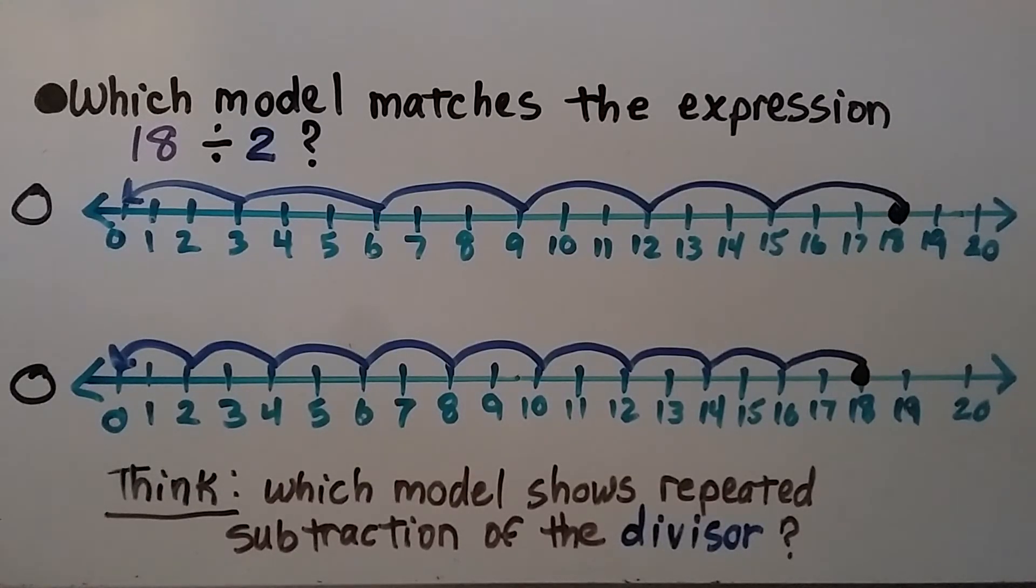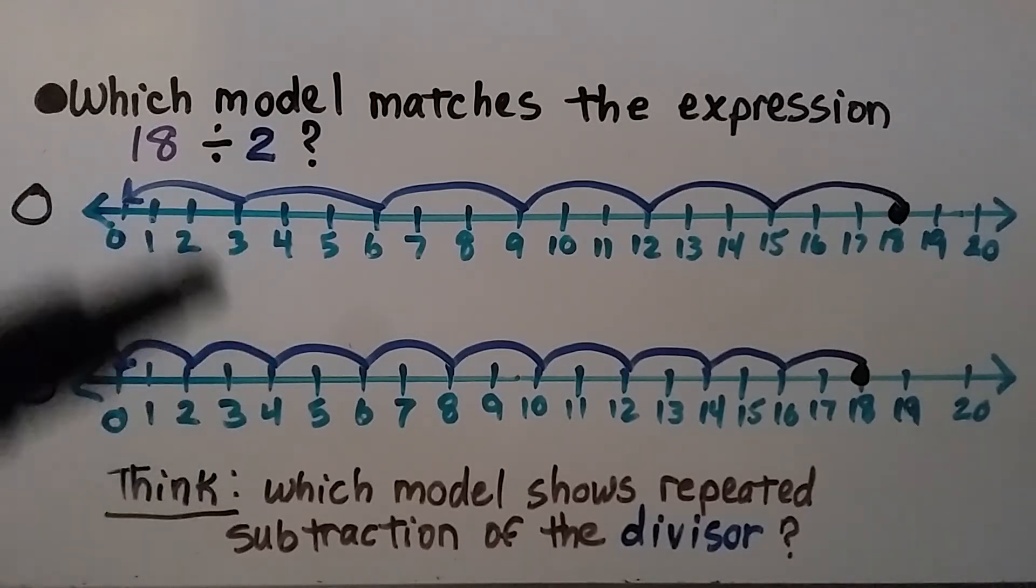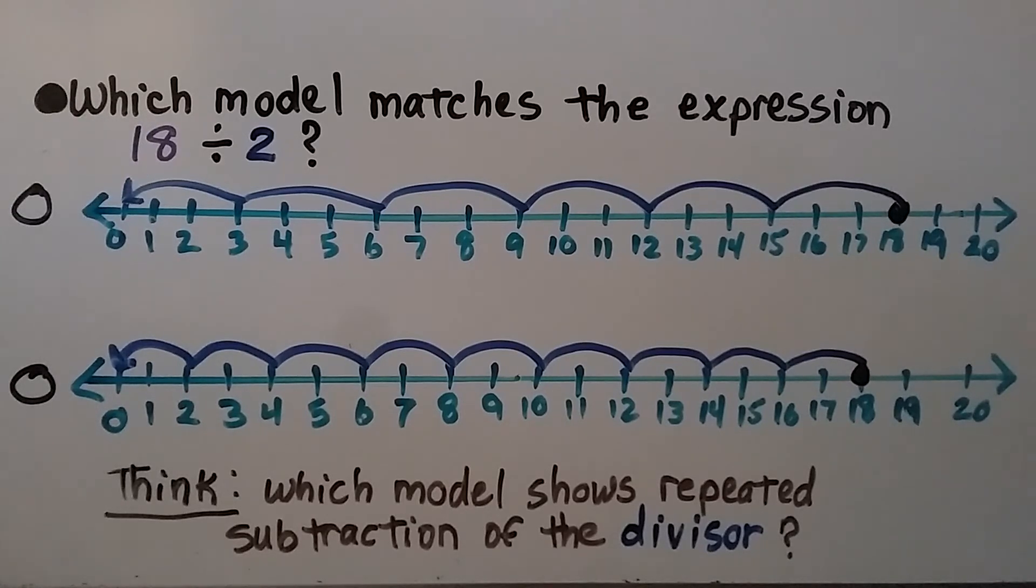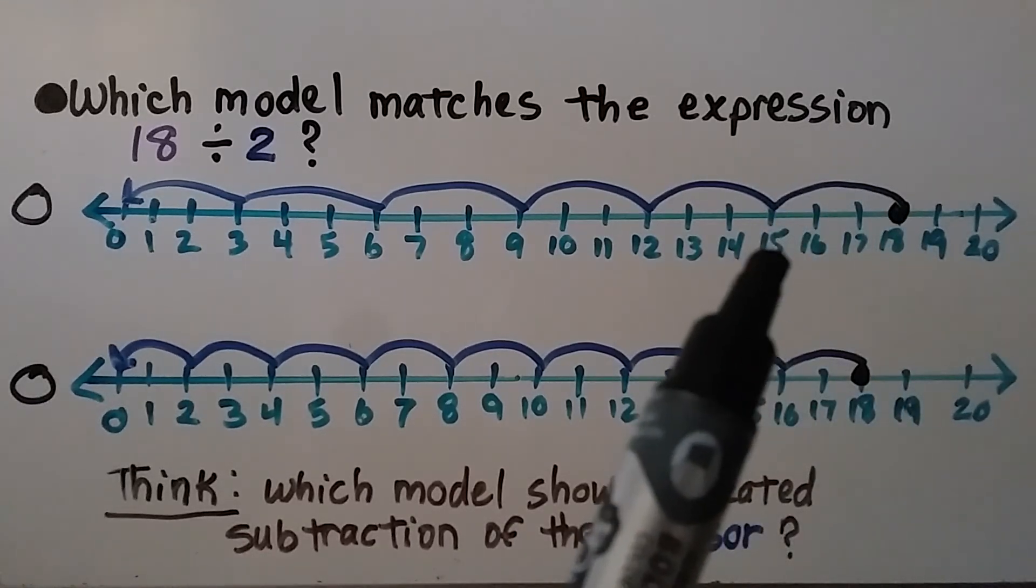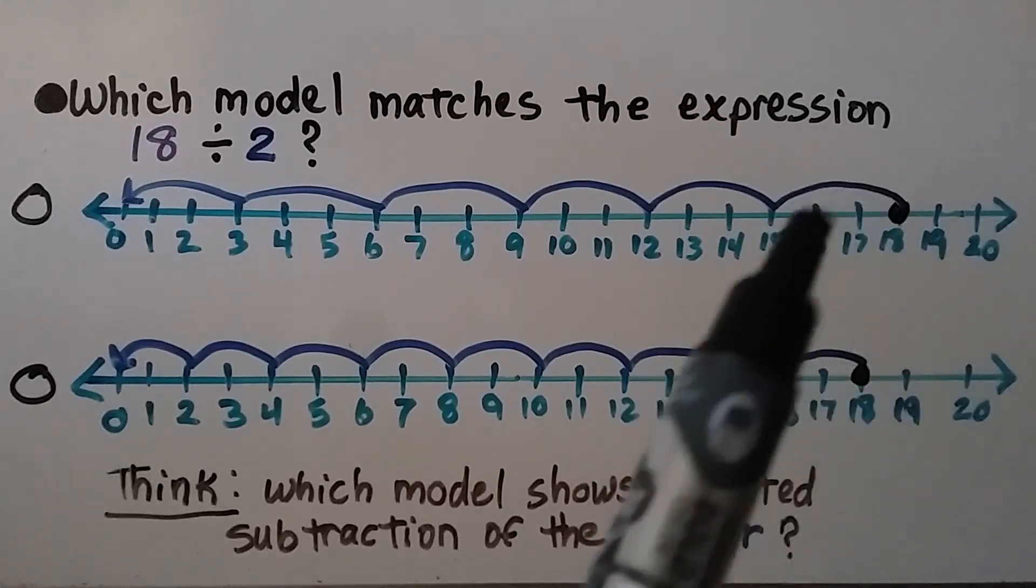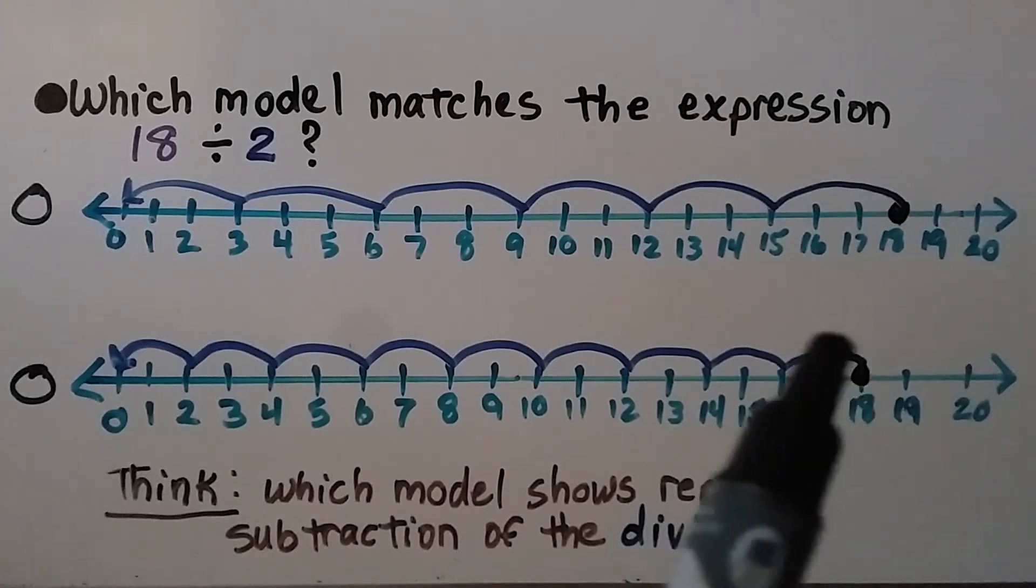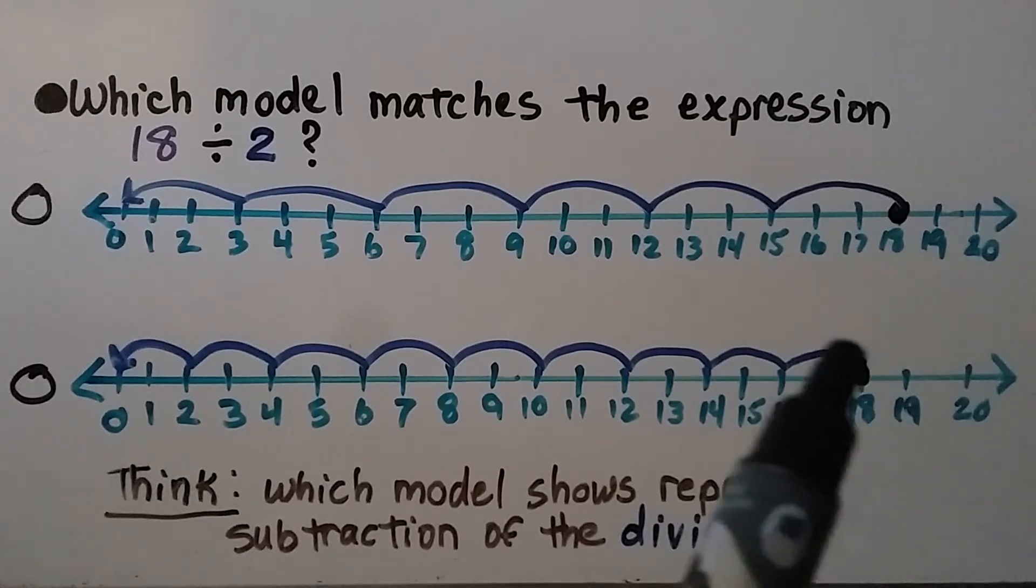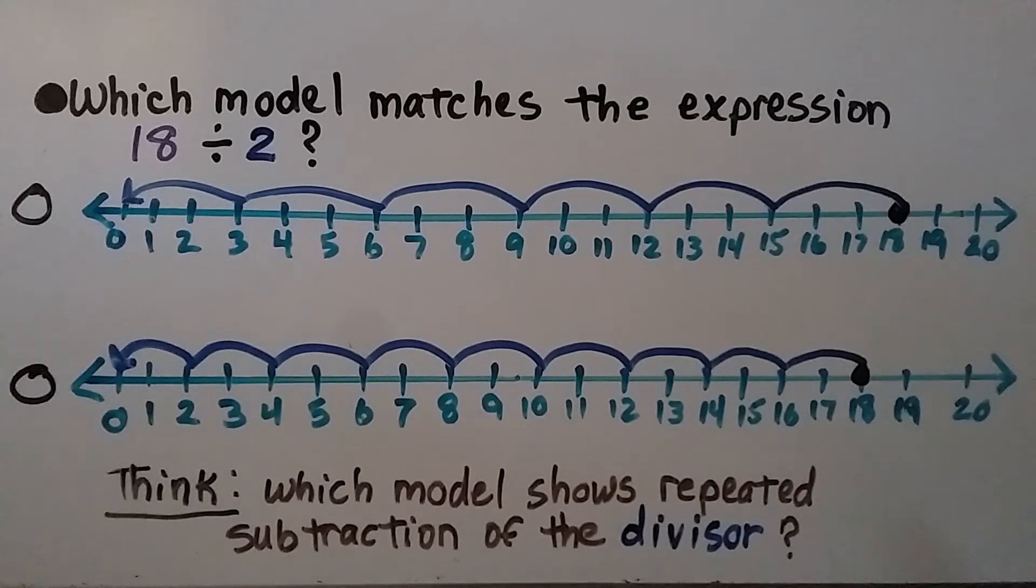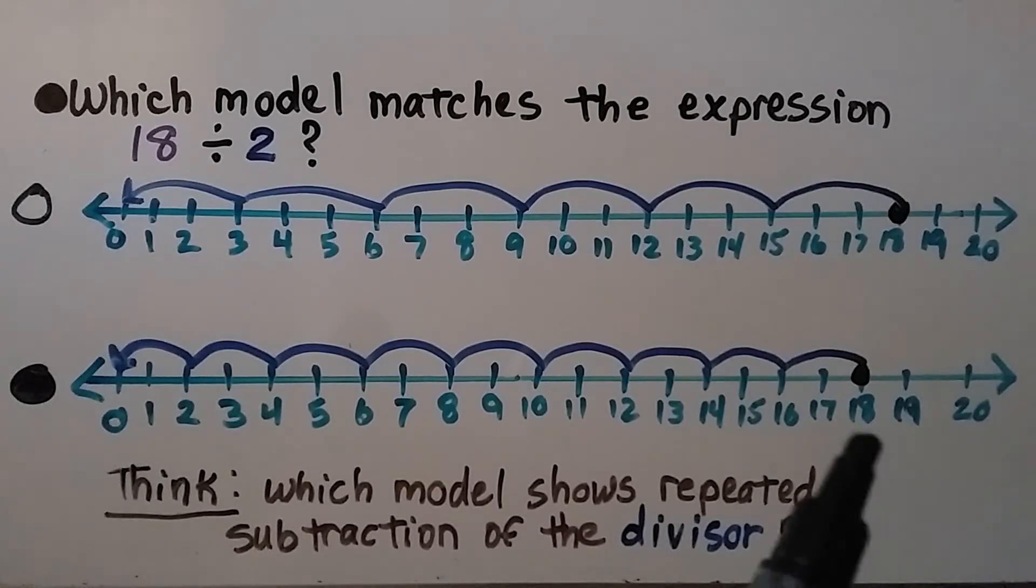Which model matches the expression 18 divided by 2? We have two number line models. We need to find which one matches 18 divided by 2. We ask ourselves and think, which model shows repeated subtraction of the divisor? 18 is the dividend, 2 is the divisor. That means the size of our jumps are going to be 2. It'll start on the 18 and each jump will be 2. We look here. It starts on the 18, but it jumps 1 to 3. 18 to 15 is 3, not 2. We look here, 18 to 16. That's a jump of 2. It started at the dividend and it jumped 2. If you think this is the right model, you're right. Whether we're using a number line or repeated subtraction, we start with the dividend.